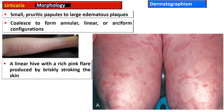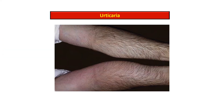Dermatographism is a rich pink flare produced by briskly stroking the skin. It is an exaggerated IgE-dependent response — one may actually write on the skin of such an individual and create a wheal in the form of words, as shown in the picture with marked dermatographism. In another picture, the right arm shows redness and edema — features of inflammation — marked by an arrow.